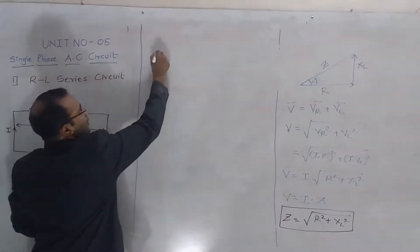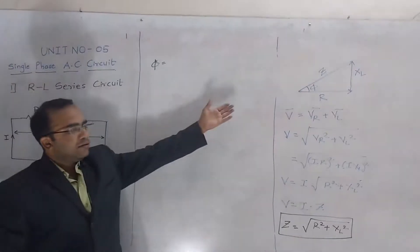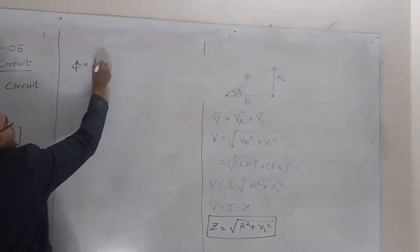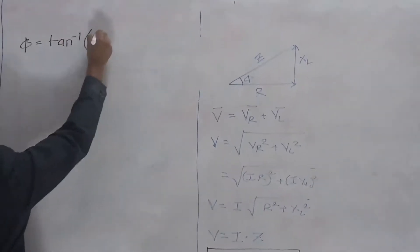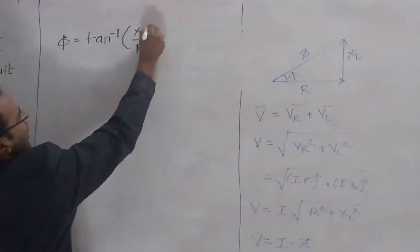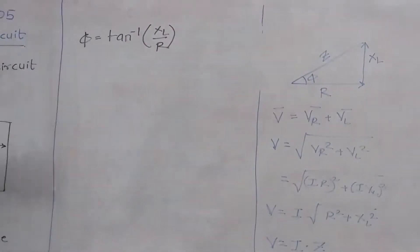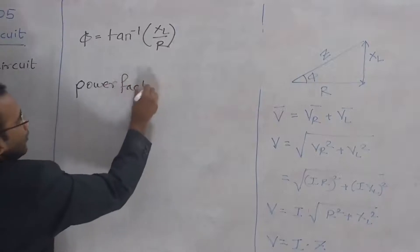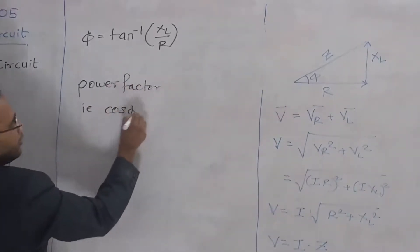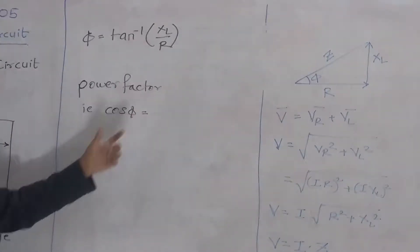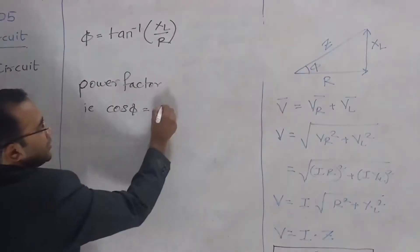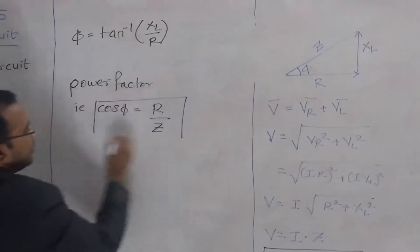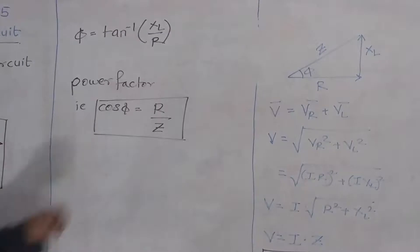The angle phi is the power factor angle. From the impedance triangle, the corner angle phi is tan inverse of the imaginary part XL upon the real part R. The power factor, that is cos phi, by trigonometry is adjacent upon hypotenuse. Here the adjacent is resistance R and the hypotenuse is impedance Z, so power factor equals R by Z.